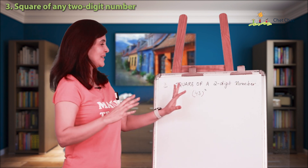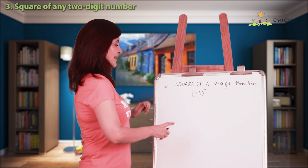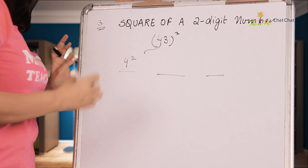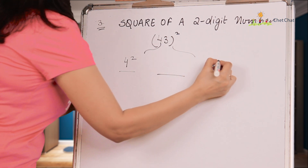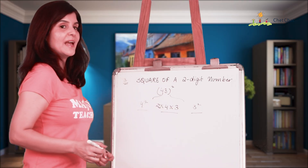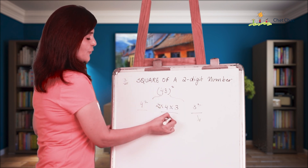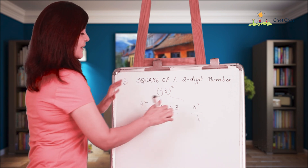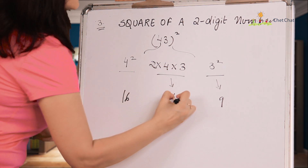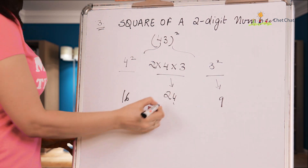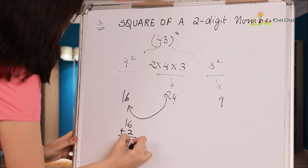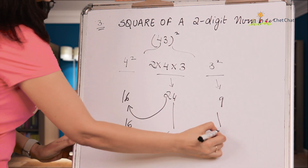Let's say we have 43 and need to find 43². Divide the result into three parts: on the left write 4² = 16, on the right write 3² = 9, and in the middle write 2 × 4 × 3 = 24. The middle term must be reduced to one digit: keep the 4 and carry the 2 to the left, so 16 + 2 = 18. Bring down the 4 and the 9: the square of 43 is 1849.